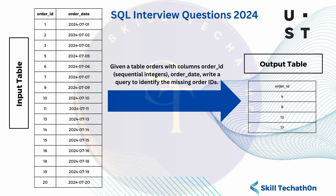We have been given an input table with order ID and order date. The order IDs are in sequential order, and we need to write a query to identify the missing order IDs.